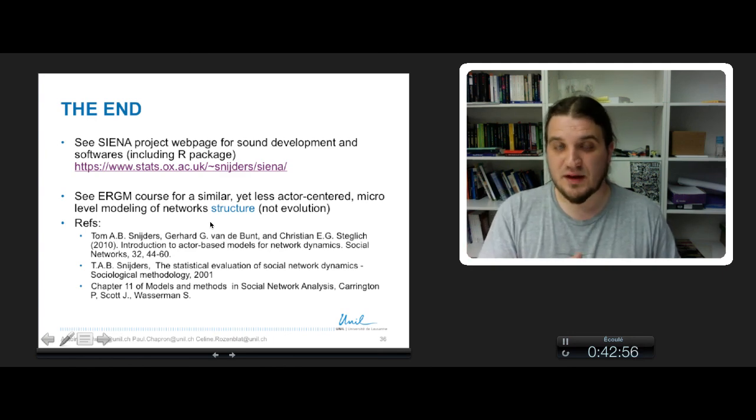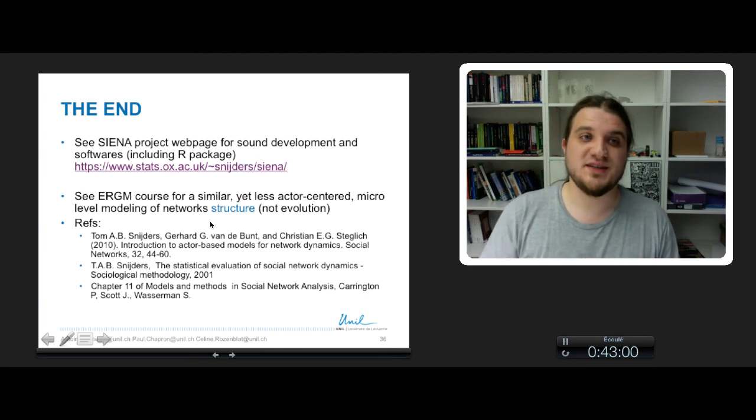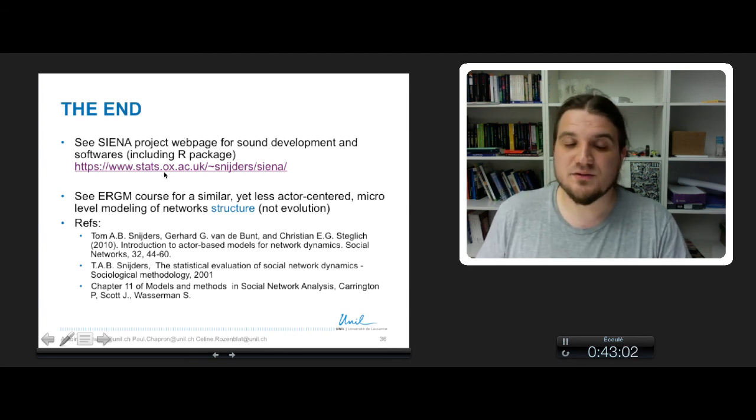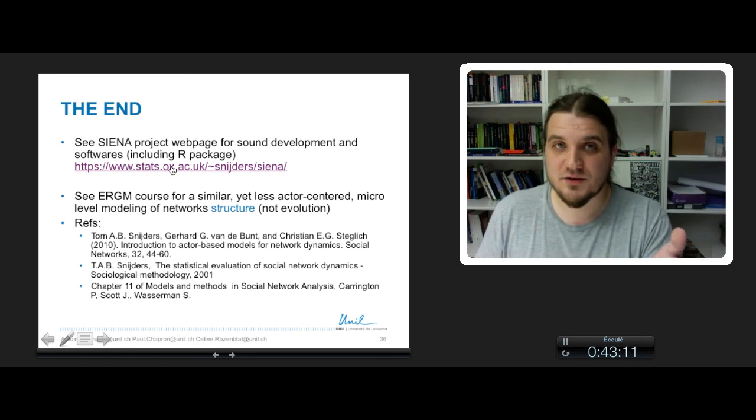Here we have explained the Markov chains for network evolution models, so the main contributor to this field is Tom Snijders, the creator of the Siena software and package for R. You can find a lot of documentation on the webpage of the project.